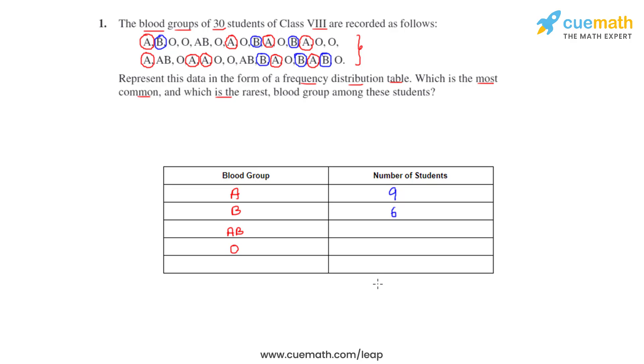Our next step is to find the number of students who have got blood group AB. So you can see that there are only 3 students who have got blood group AB.